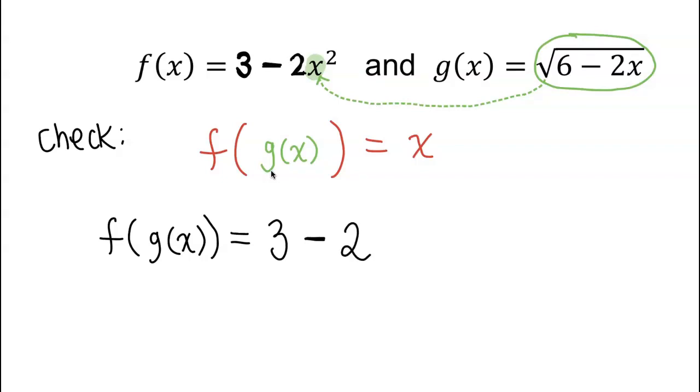But don't write x squared now. We're not going to do x squared. We're going to write that square root notation. Square root of 6 minus 2x. So I just substituted that square root into that x, but what's still left? That exponent of 2.